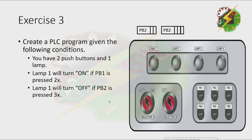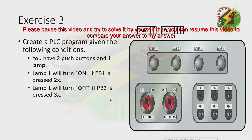Exercise 3: Create a PLC program given the following conditions. You have two push buttons and one lamp. Lamp 1 will turn on if PB1 is pressed 2 times. Lamp 1 will turn off if PB2 is pressed 3 times. Let's have our demonstration. I want you to pause this video and try to solve it by yourself. After that, you can resume this video to compare your answer to my answer.